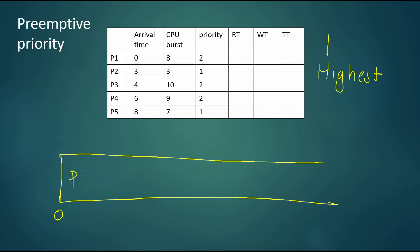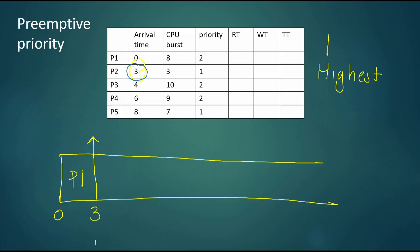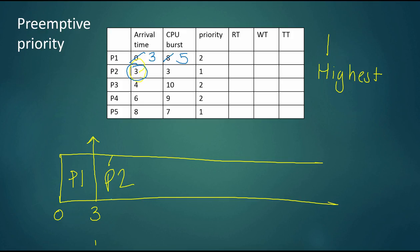At time zero we have P1 on the processor. However, P2 is going to arrive at time three and has a higher priority, so at time three P1 is preempted and kicked off the CPU. P1 goes back into the ready queue at time three with five time units of CPU burst left. P2 then goes on the processor at time three, has a CPU burst of three, and will be done at time six.